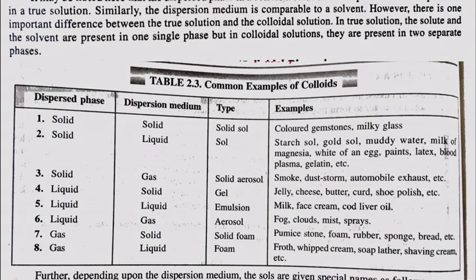Similarly, a solid sol is the type in which the dispersed phase is solid and the dispersal medium is also solid. Examples include colored gemstones and milky glass.